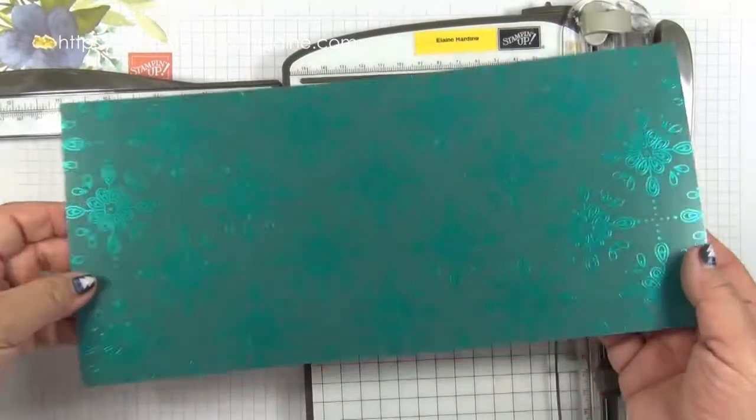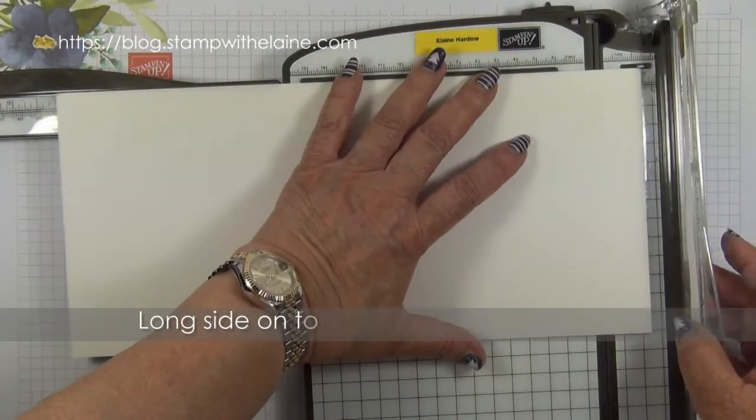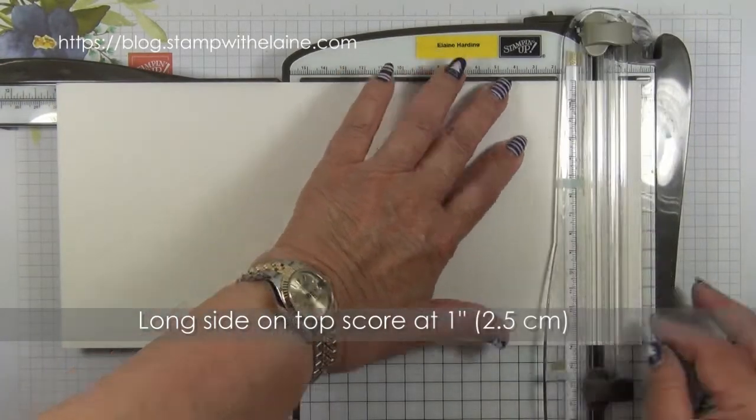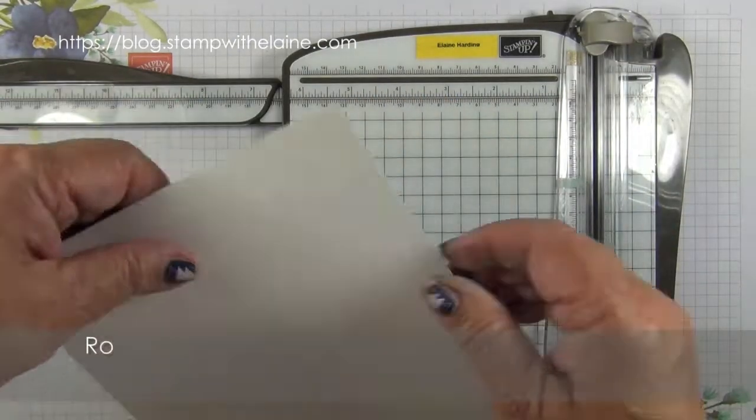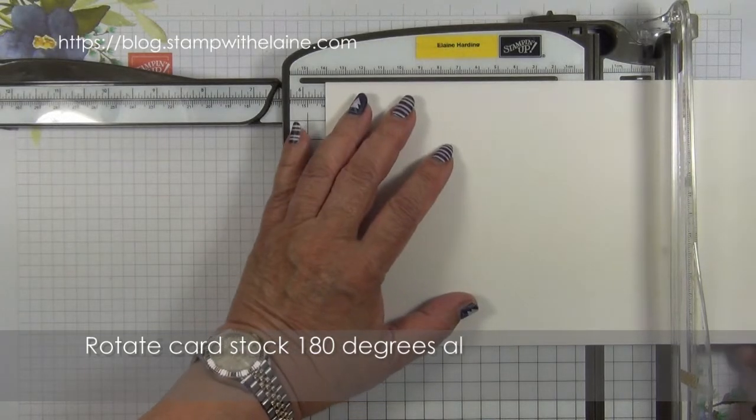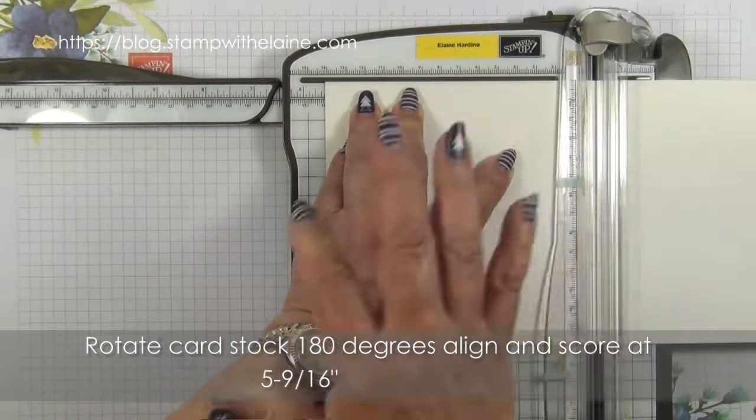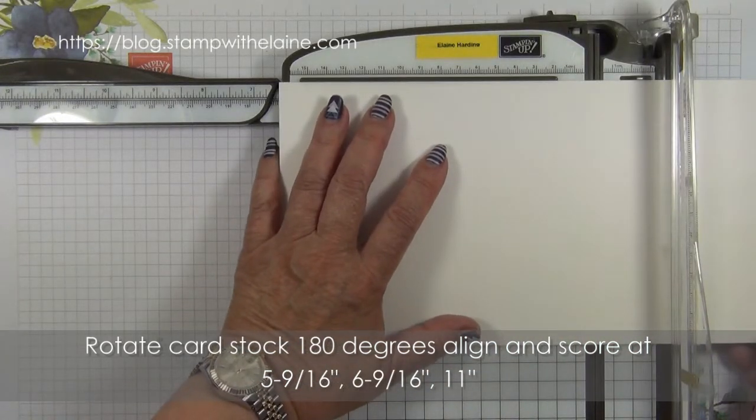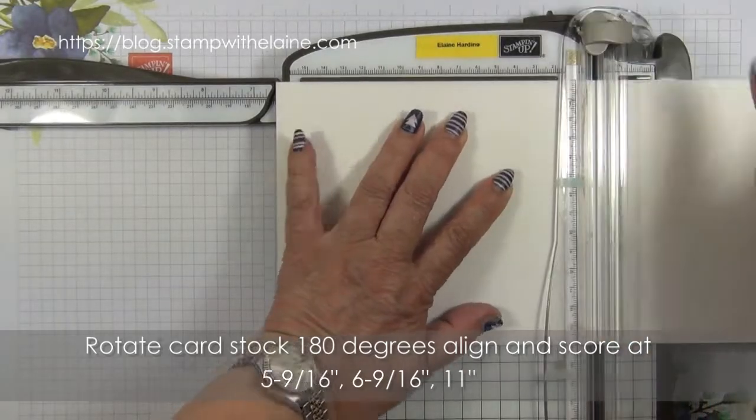I'm going to score on the reverse side because you'll see better that way. So you score at one inch first, then turn it the other way and then you score at five and nine sixteenths, then at six and nine sixteenths, and eleven.